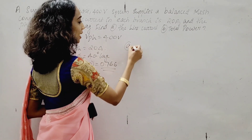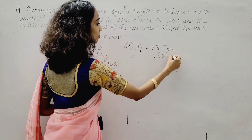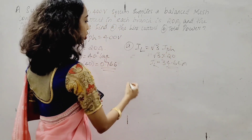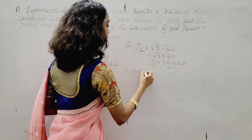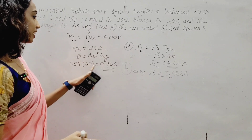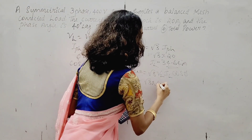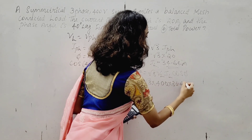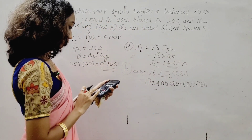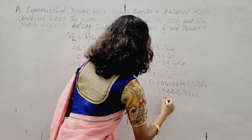For the line current, using equation A: line current IL equals root 3 times phase current, that is root 3 into 20, giving 34.64 ampere as the line current. Total power W equals root 3 times VL times IL times cos φ, that is root 3 into 400 into 34.64 into 0.76.